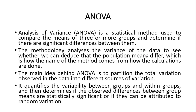Analysis of variance is a statistical method used to compare the means of three or more groups and determine if there are significant differences between them. यानी तीन या तीन से ज्यादा groups होंगे तो हम उनको compare करेंगे और देखेंगे कि उनके means में significant difference है। ANOVA में variance को analyze किया जाता है यह देखने के लिए कि population के अंदर means में कोई differences है या नहीं।